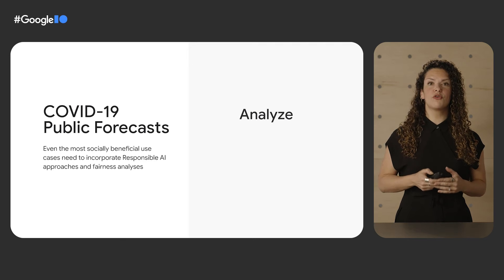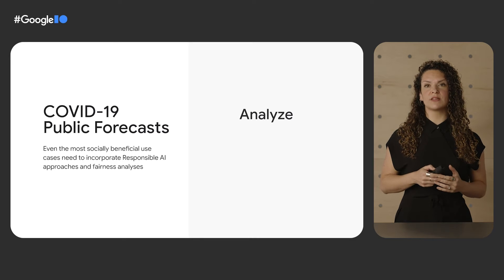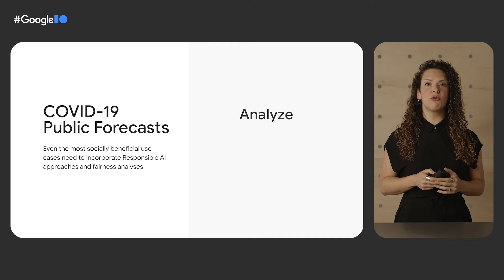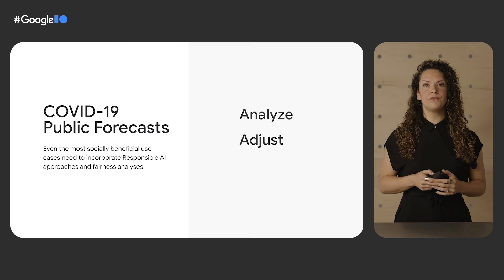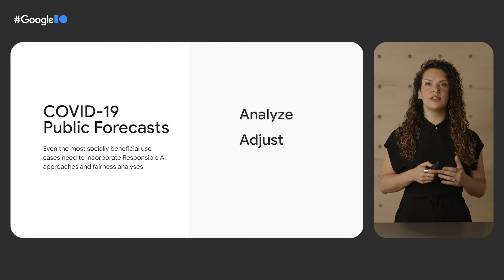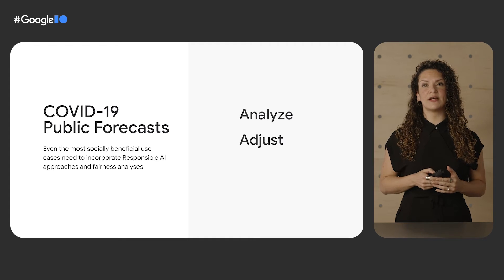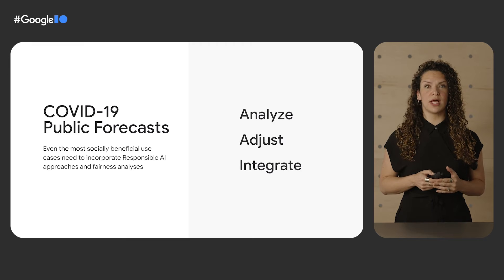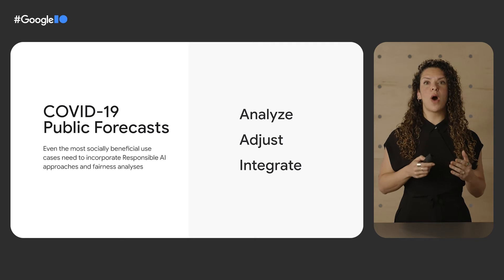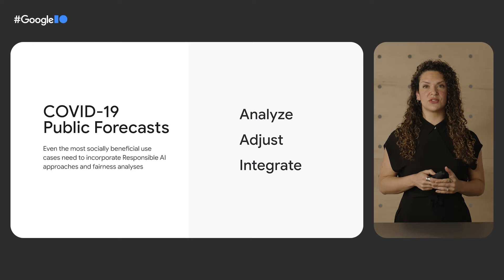To use a concrete example, for COVID-19 Public Forecasts, the Analyze phase included things like working with domain experts to appropriately define an effective intervention, and acknowledging and taking steps to account for existing social contexts and systemic inequities reflected in data sets. The Adjust phase included proactively testing for accuracy and bias across subgroups, and adjusting original product goals when necessary. The Integration phase included creating guidelines for use to avoid over-reliance on the model, and ultimately winding down public forecasts when the quality of data sources deteriorated.